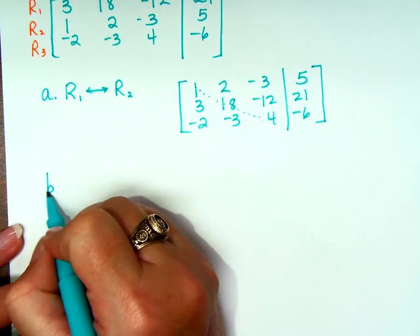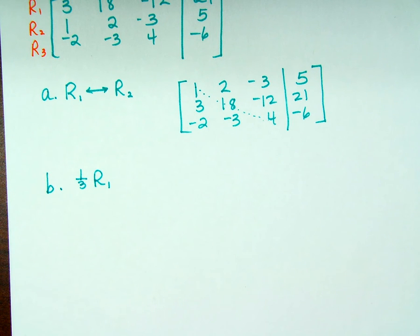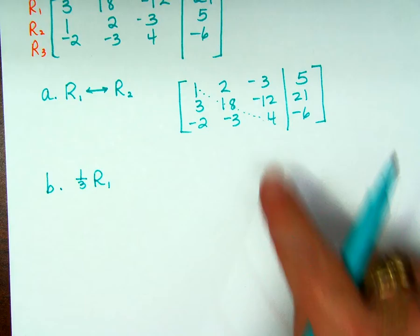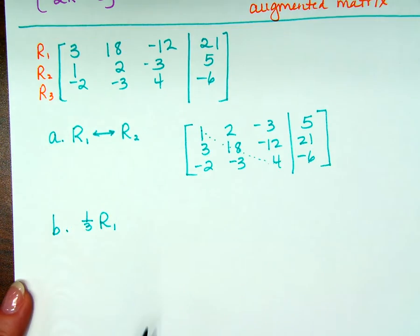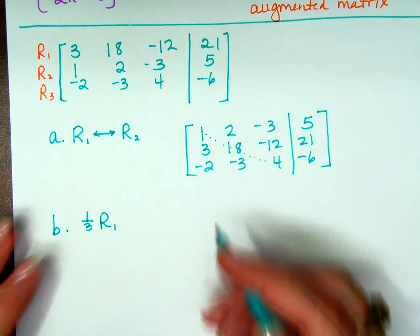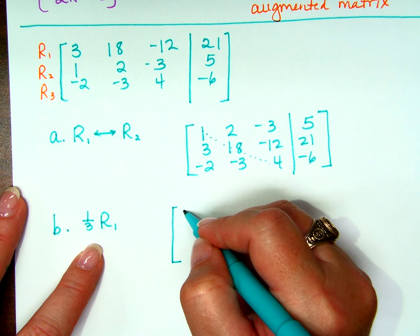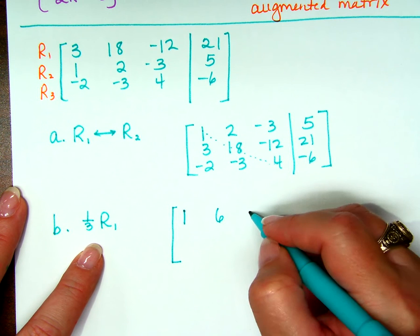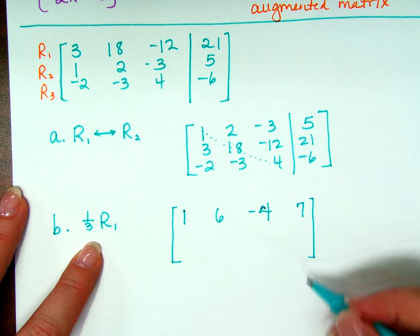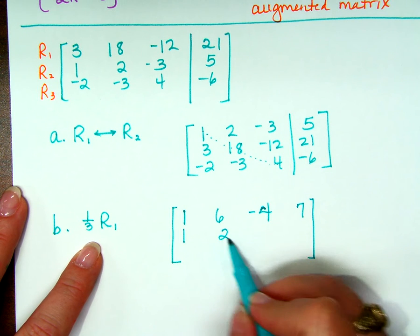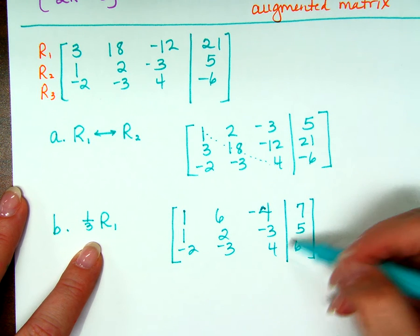So, what do you think it wants me to do now? Original problem, right? These are all small parts of the same problem, so we're going back to the original problem. So, if I'm taking 1 third of R1, what do they want me to do? So, this is 1 and 6 and negative 4 and 7. What about row 2 and row 3? Yeah, it didn't tell me to do anything, so I just rewrite them exactly as they are.